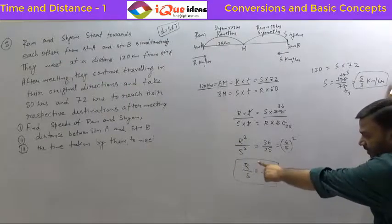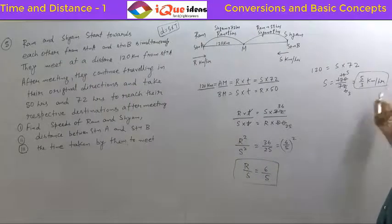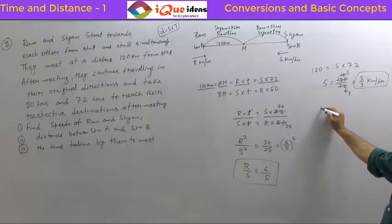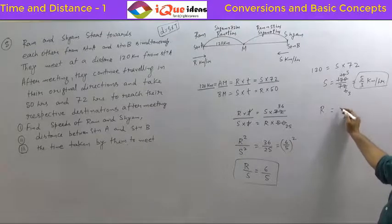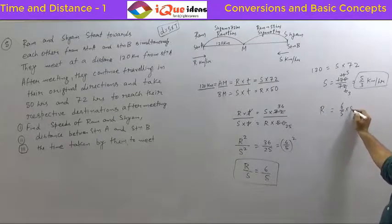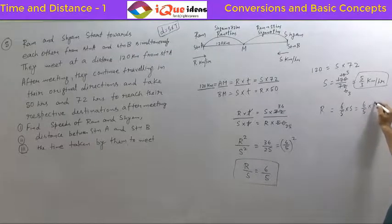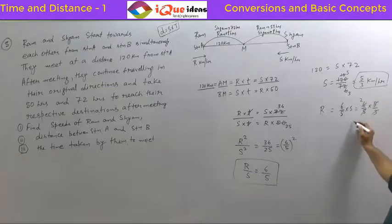Now that we have the ratio r/s = 6/5, we can calculate r. Speed of Ram, r = (6/5) × s = (6/5) × (5/3). The 5s cancel, and 6/3 = 2, so the speed of Ram is 2 km per hour.